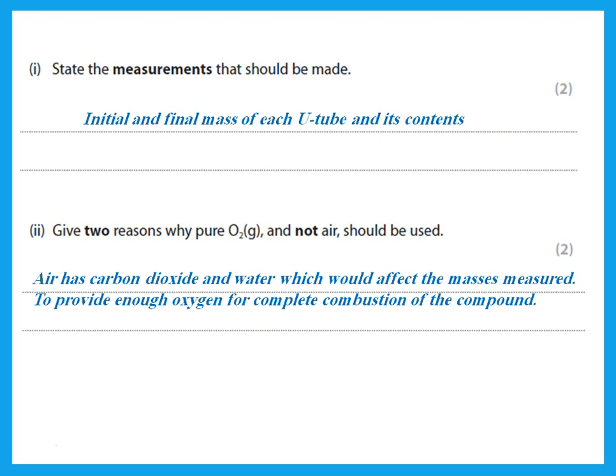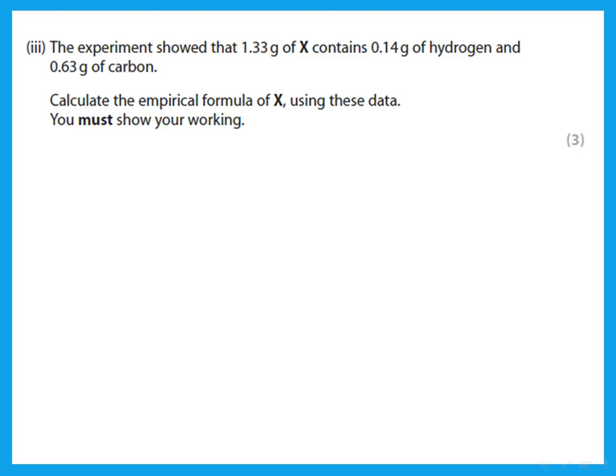Pure oxygen rather than air should be used for two reasons: air contains CO₂ and water, which would also be absorbed by the substances in the tubes, giving inaccurate mass measurements; and using pure oxygen ensures there is enough oxygen for complete combustion of the compound. The experiment showed that 1.33 g of X contains given masses of hydrogen and carbon.